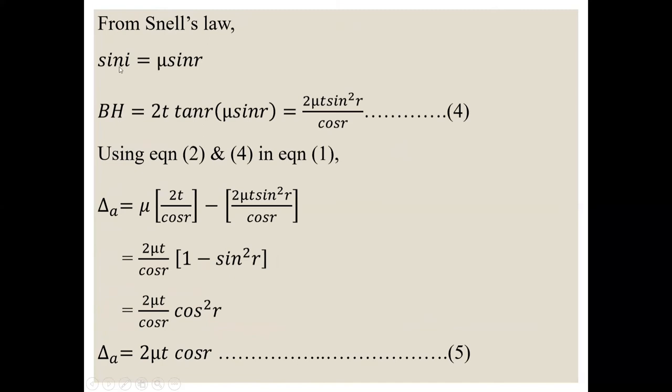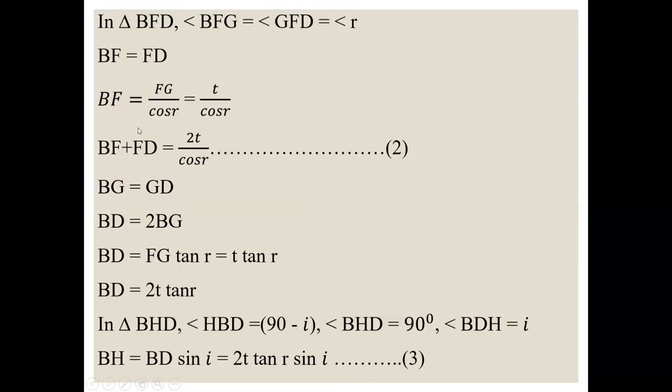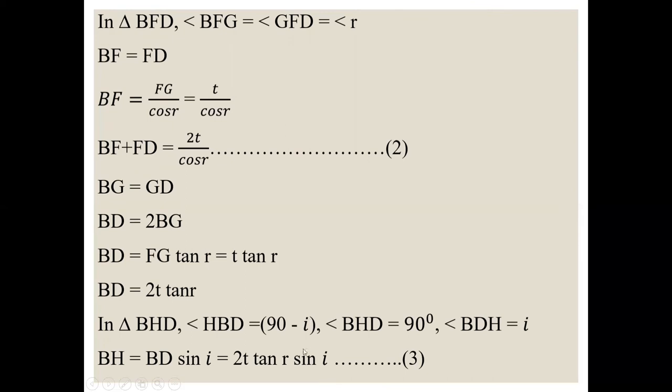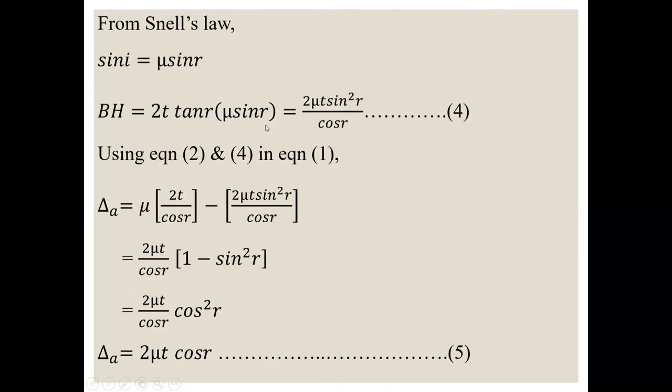So from Snell's law, sin i is equal to mu sin r. So BH is equal to 2t tan r sin i. So 2t tan r into sin i means mu sin r. Here sin i is mu sin r. So 2 mu t sin square r upon cos r equation 4.